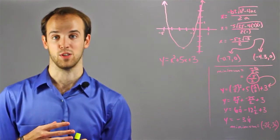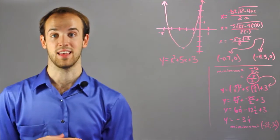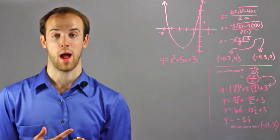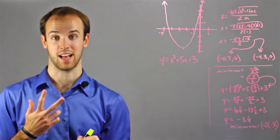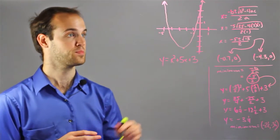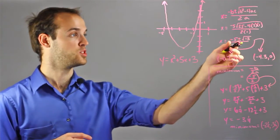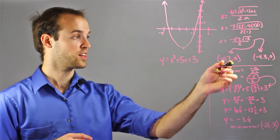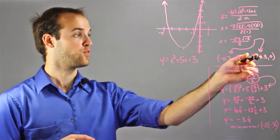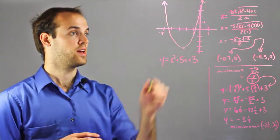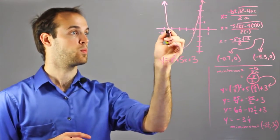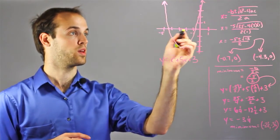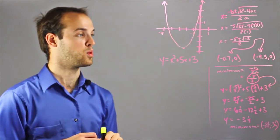The cool thing about the quadratic formula is once I solve for my x values, that actually gives me the x-intercepts of this parabola, which I should have two. It should cross the x-axis in two places. And I can see that once I do the math here, I'm going to get negative 0.7 comma 0 and negative 4.3 comma 0. And they correspond to these points right here.